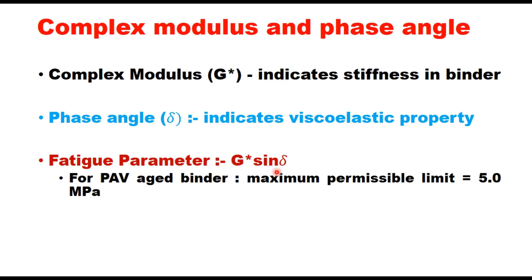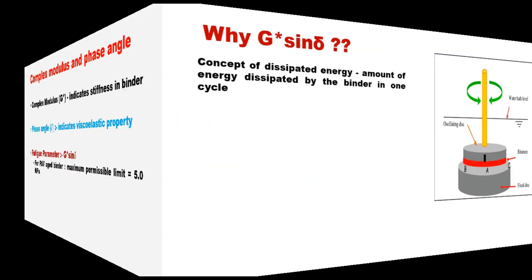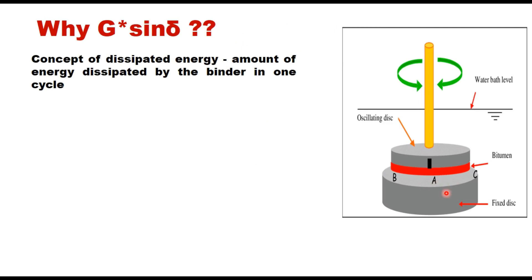In the DSR, the bitumen sample is placed between two plates. The lower plate is fixed and the upper plate oscillates at 10 radians per second, moving 90 degrees. One oscillation means the plate moves from A to B, back to A, then to C, and back to A. The energy dissipated in one oscillation is the basic theory for calculating G* sine delta, and the amount of energy dissipated per cycle can be computed from this equation.